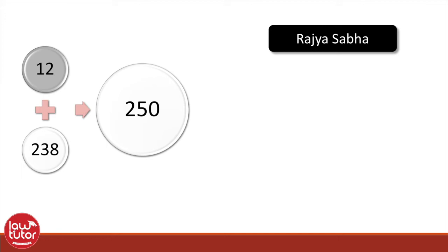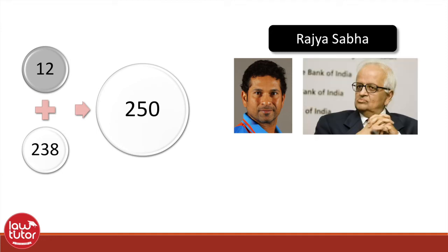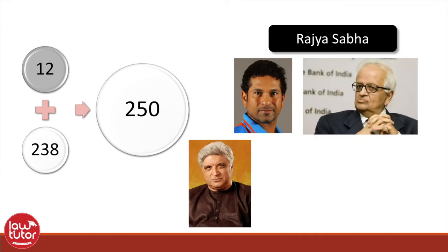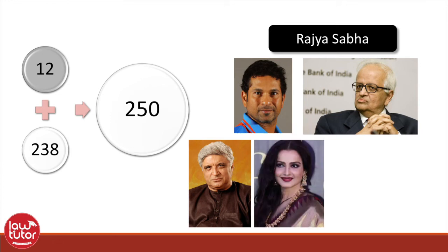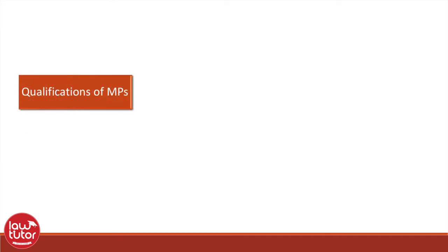The 12 nominated members are nominated by the president from amongst persons having special knowledge or practical experience in matters such as literature, science, art, and social service. A few examples of such nominated persons are: cricketing icon Sachin Tendulkar, former RBI governor Bimal Jalan, famous lyricist and poet Javed Akhtar, actress Rekha, and Indian Olympic boxer Mary Kom.